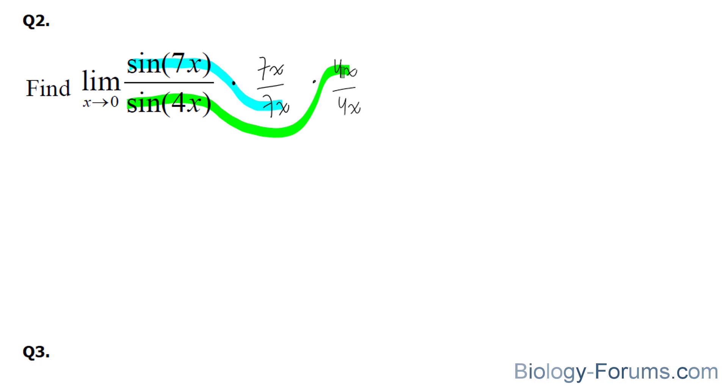Notice that this and this will lead to 1 as x approaches 0, and this with that will also approach 1. You are left with 7x over 4x. The 7x and the 4x have x's which will cancel out, leading you to an answer of 7 over 4.